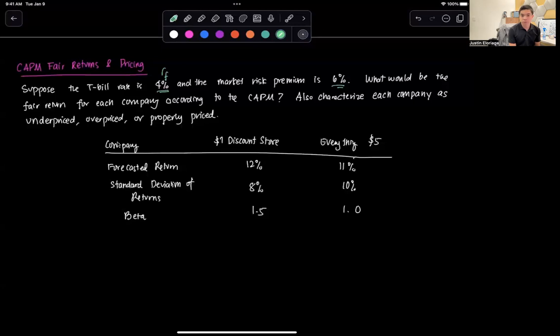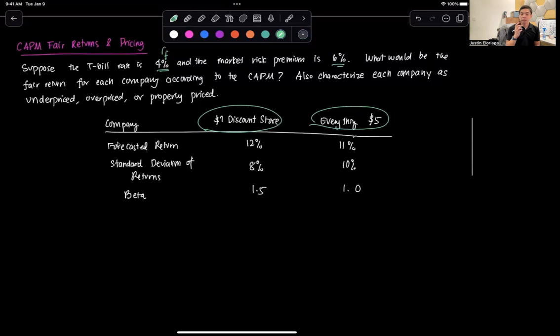And it's asking here what would be the fair return for each company according to the capital asset pricing model, and we also need to characterize whether each company is underpriced, overpriced, or properly priced. So in this sample problem we have two companies: the Dollar Discount Store and Everything Five Dollars. We have the forecasted return of the Dollar Discount Store being 12%, Everything Five Dollars being 11%, and we're given the standard deviation of returns and the betas for each of these companies.